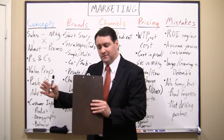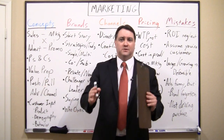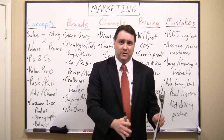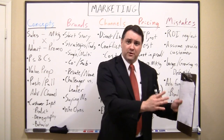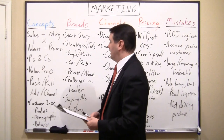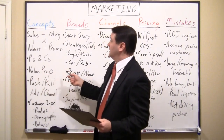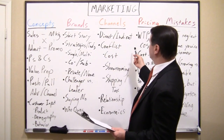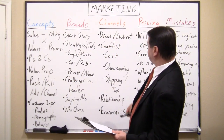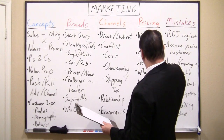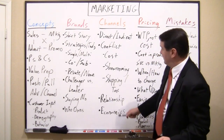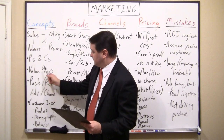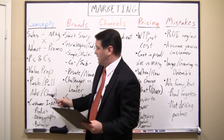Then there's the value chain, which looks at the path from raw materials to manufacturer to distributor to retailer to the end customer. We try to figure out how much of that and what the economics are in the channel. That's the value chain, so I'll end the value proposition discussion there.